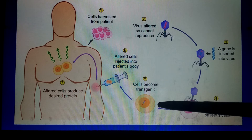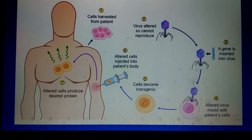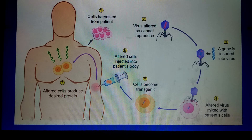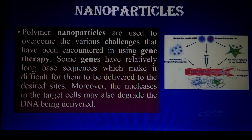The gene from the vector is transferred into the harvested cells. The cells are grown in culture and then transplanted back into the human body, where they produce their product in the form of proteins, hormones, or anything else. This is the overall principle of gene therapy.